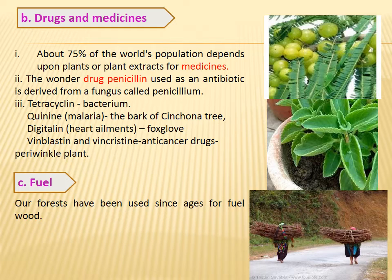For example, the wonder drug penicillin, which is the first antibiotic, has been found from Penicillium. Tetracycline is taken from bacterium. Quinine, a wonder drug for malaria cure, is taken from the bark of the cinchona tree. Digitalis, an important drug for heart ailment, is taken from foxglove. Vinblastine and vincristine, anti-cancerous drugs, are taken from the periwinkle plant. The third consumptive use value is fuel — since ages, wood has been used as fuel for domestic purposes.